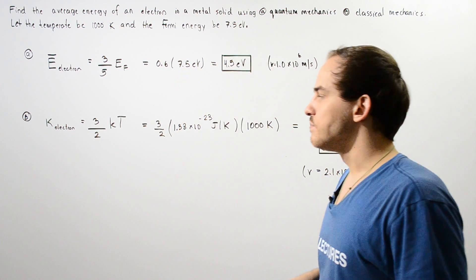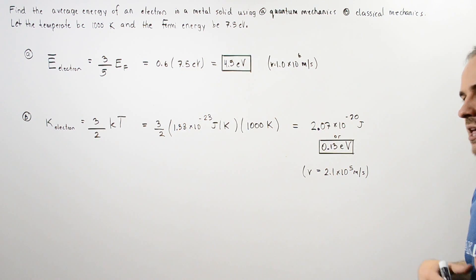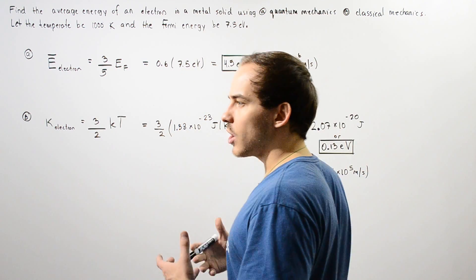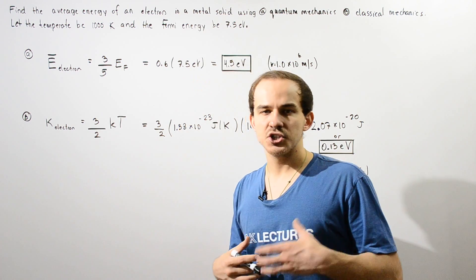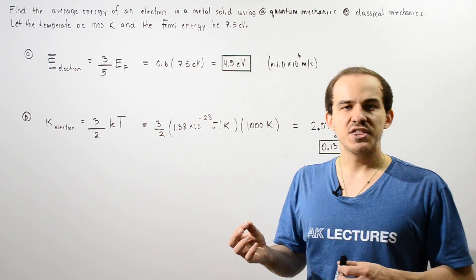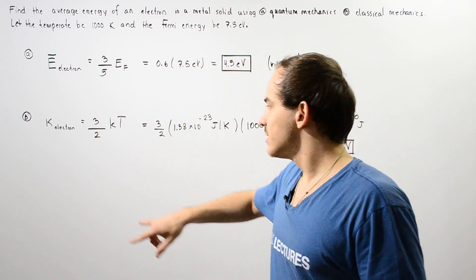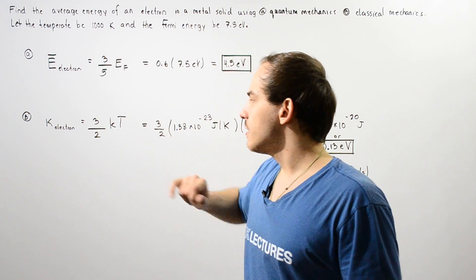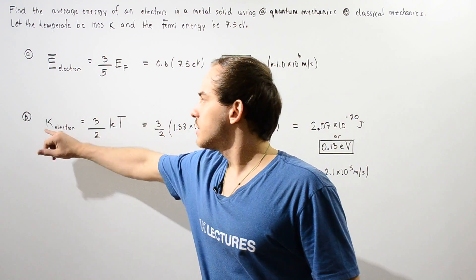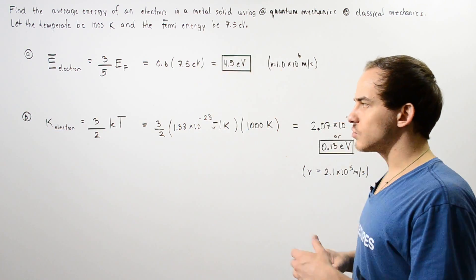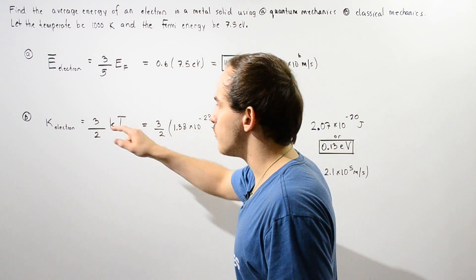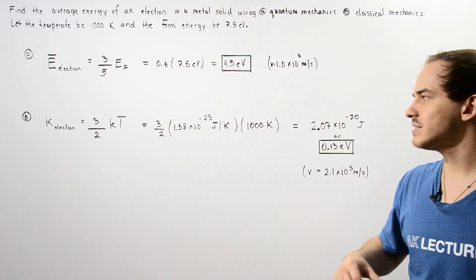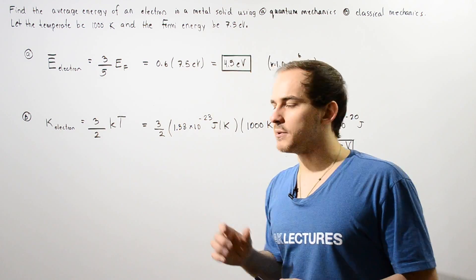Now in part B, if we want to calculate the kinetic energy of the electron using classical physics, we assume that the electron is an ideal gas. So we can apply the following equation: the kinetic energy equals 3/2 multiplied by Boltzmann constant multiplied by the temperature in Kelvins.